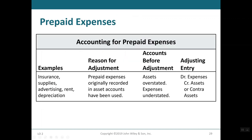Summary of prepaid expenses: examples include insurance, supplies, advertising, rent, and depreciation. The reason for adjustment is that prepaid expenses originally recorded as assets have been used. Before adjustment, assets are overstated and expenses are understated. The adjusting entry is to debit the expense account and credit the asset account or contra asset account to bring everything into balance.